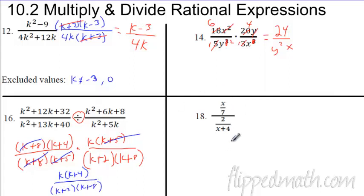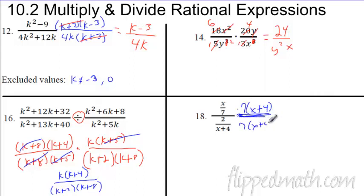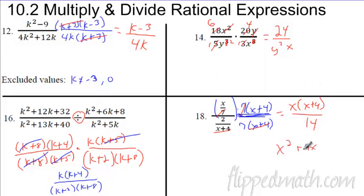For complex fractions, one method is to flip the bottom fraction and multiply — just like division. Another method: find the common denominator of seven and x plus four, then multiply both the numerator and denominator of the complex fraction by that common denominator. The seven cancels the seven, leaving x times x plus four on top. On the bottom, things cancel and you're left with fourteen. You can leave x plus four factored.